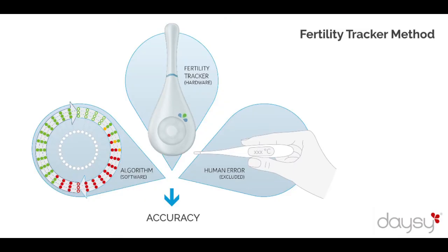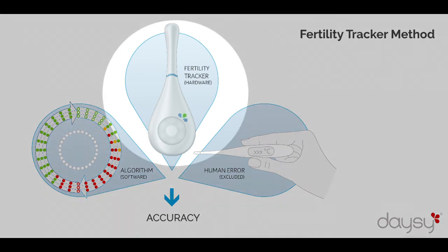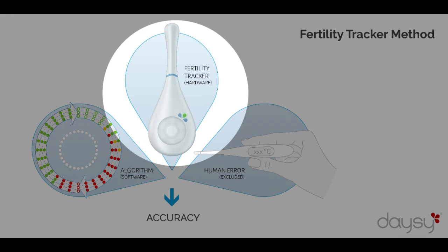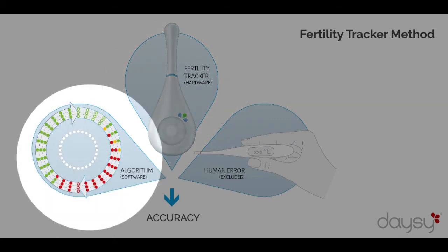The Fertility Tracker method is based in part on the calculothermal method and consists of a combination of three elements. First, the recording and learning of new data by a Fertility Tracker. DAISY uses the basal body temperature method daily, the input of days with menstruation, as well as the collected historical cycle data. Second, the statistically significant evaluation of the post-ovulation temperature rise with current and historical data from the database by an algorithm adapted to the female cycle.